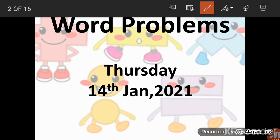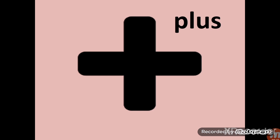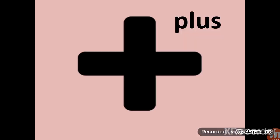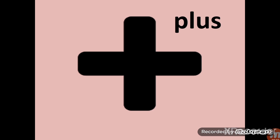Let's start by recalling the symbols. The first symbol is the symbol of plus, this is the symbol of minus, and this one is the symbol of equals to. I am showing you all these symbols because you will have to make an addition statement or subtraction statement according to the word problem. You must be familiar with all these symbols.